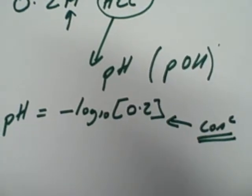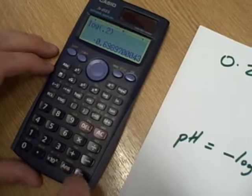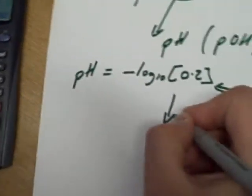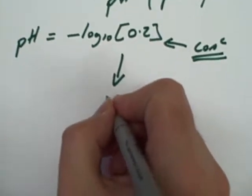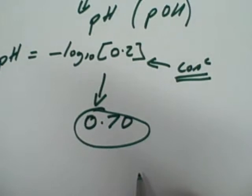So, log 0.2, now don't forget, you've got to take that minus off. So, I'm going to end up with a pH, I'll call it 0.70, so the pH is 0.70.